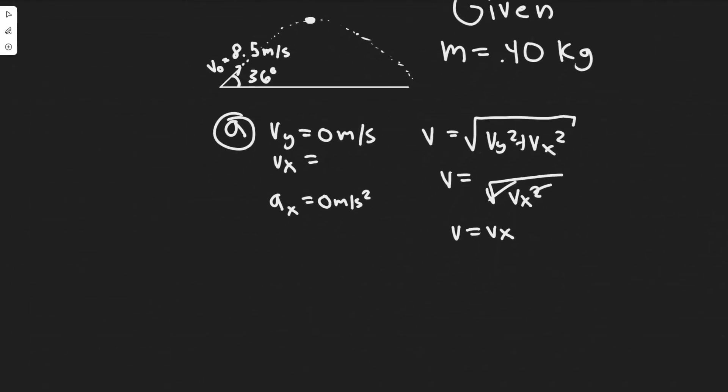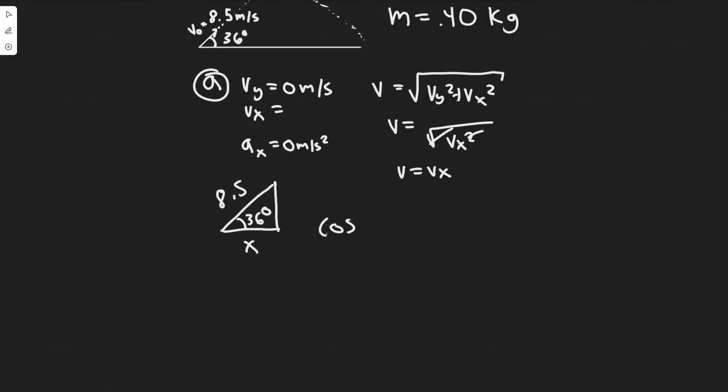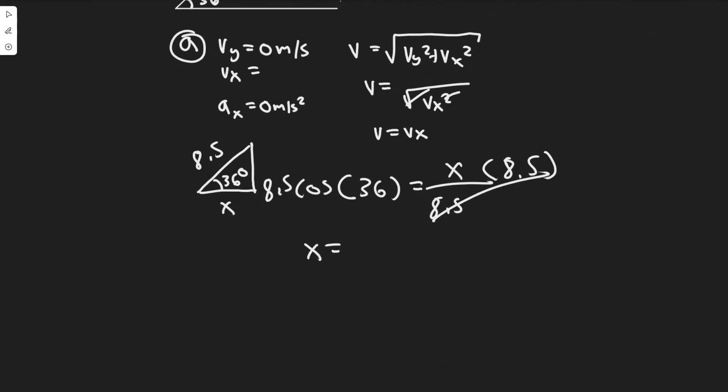To find the x component, pretty simple - you can imagine it like a triangle. This is our 8.5 and this is our angle here. We want to find the x component which is this side. The way we do that is by using the cosine function. The cosine of an angle is the adjacent side over the hypotenuse, so the adjacent side is x over the hypotenuse. This means our x component is just 8.5 times cosine of 36.